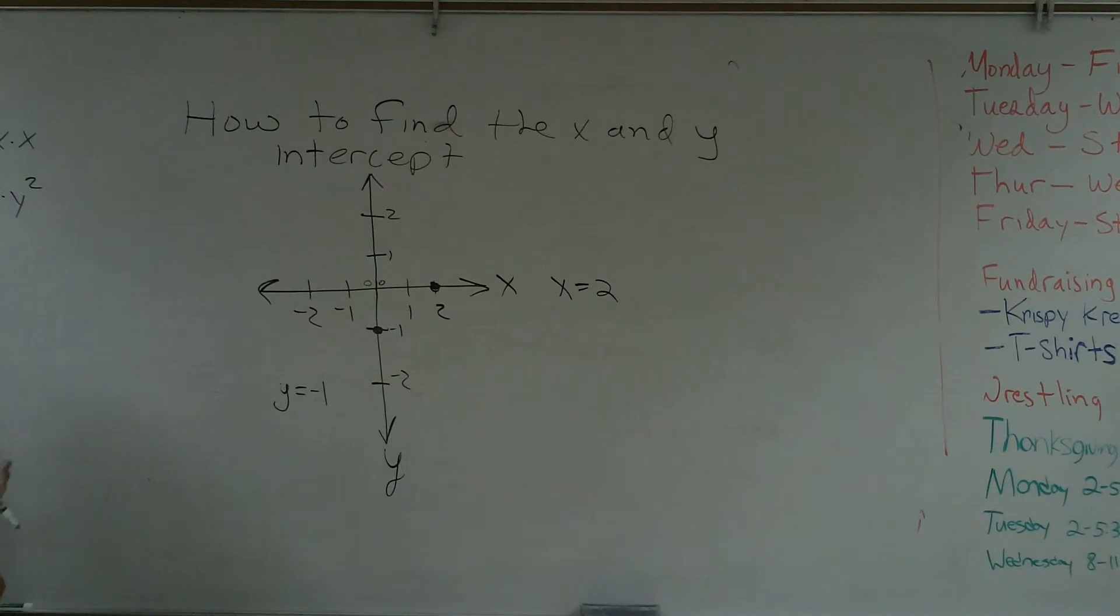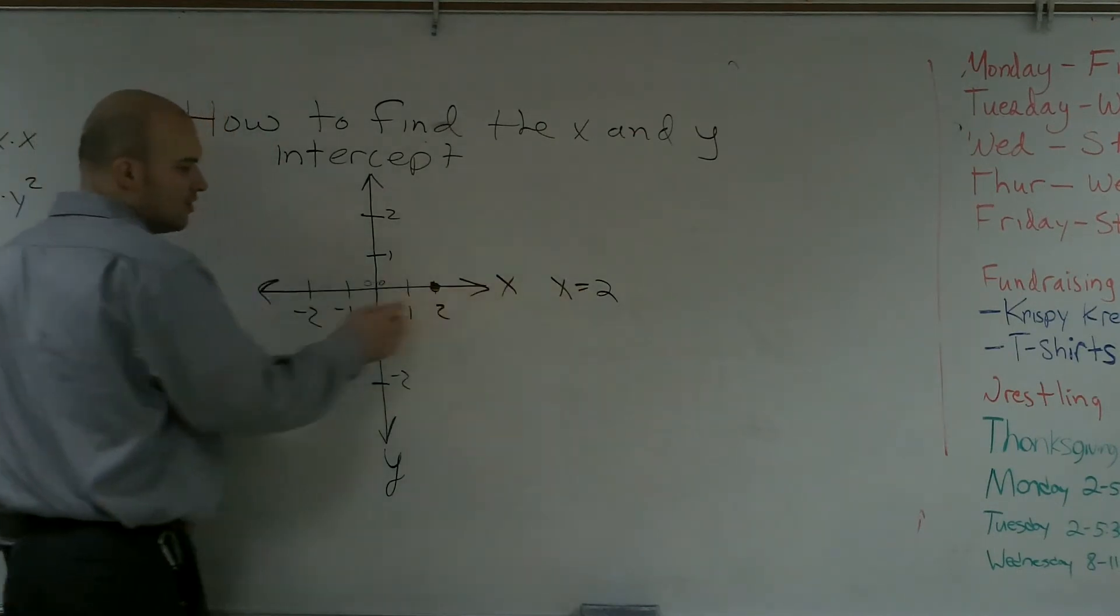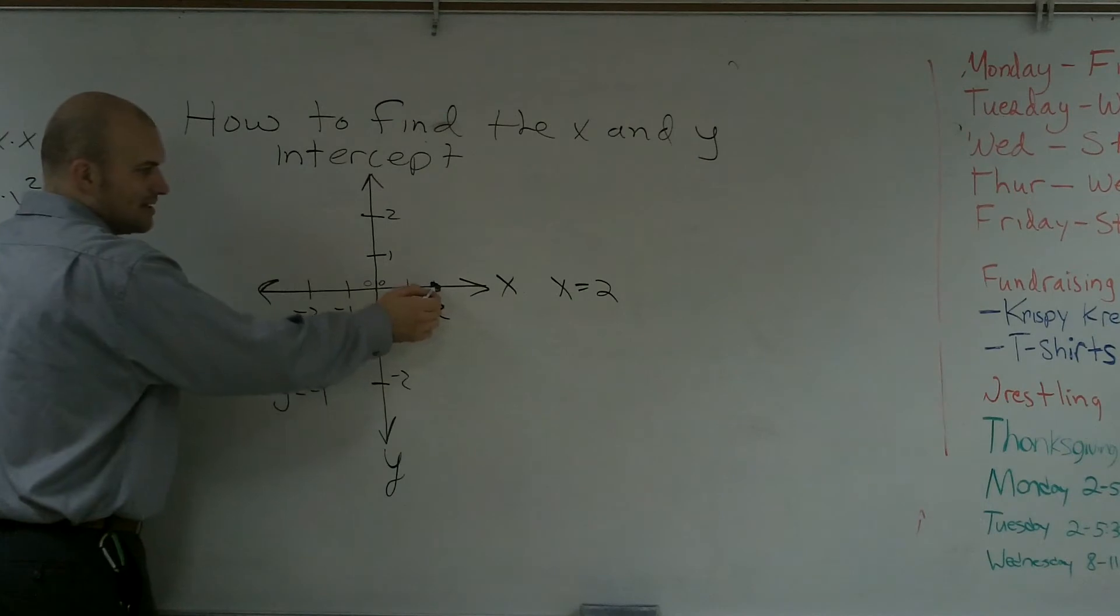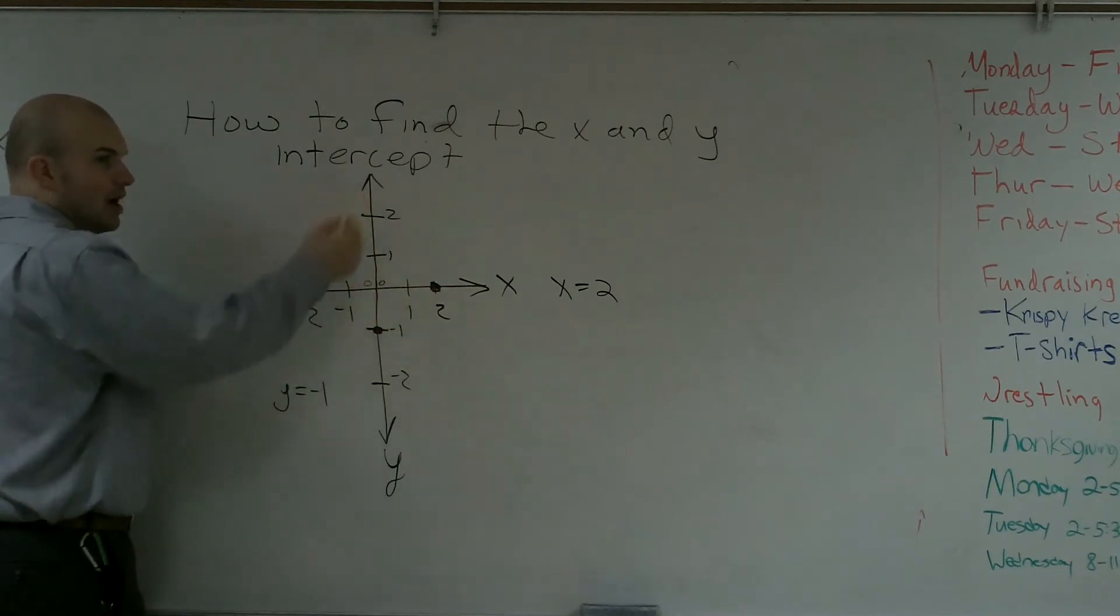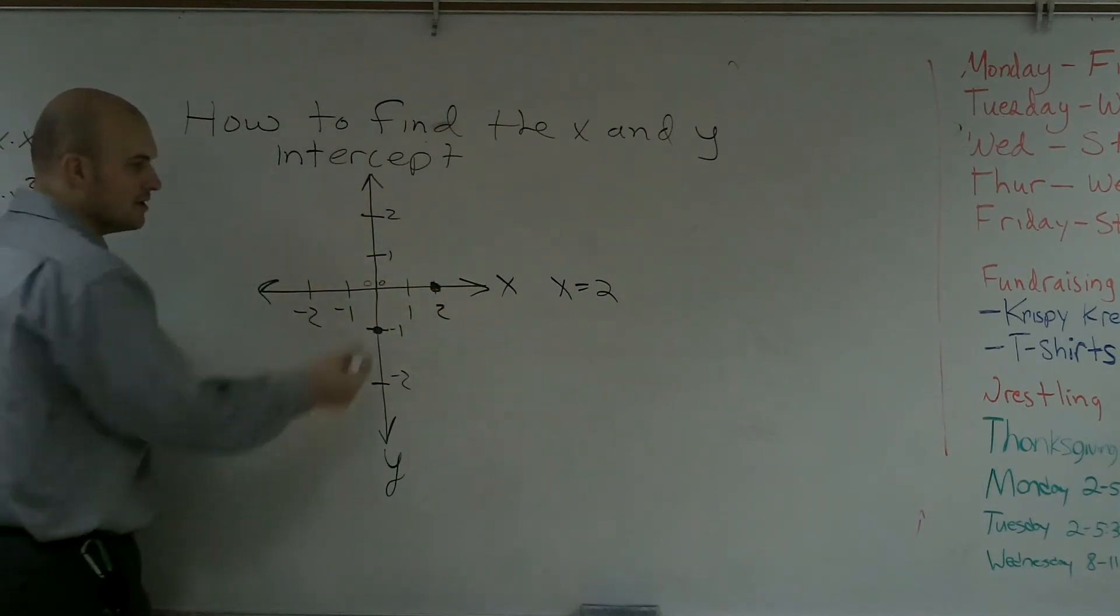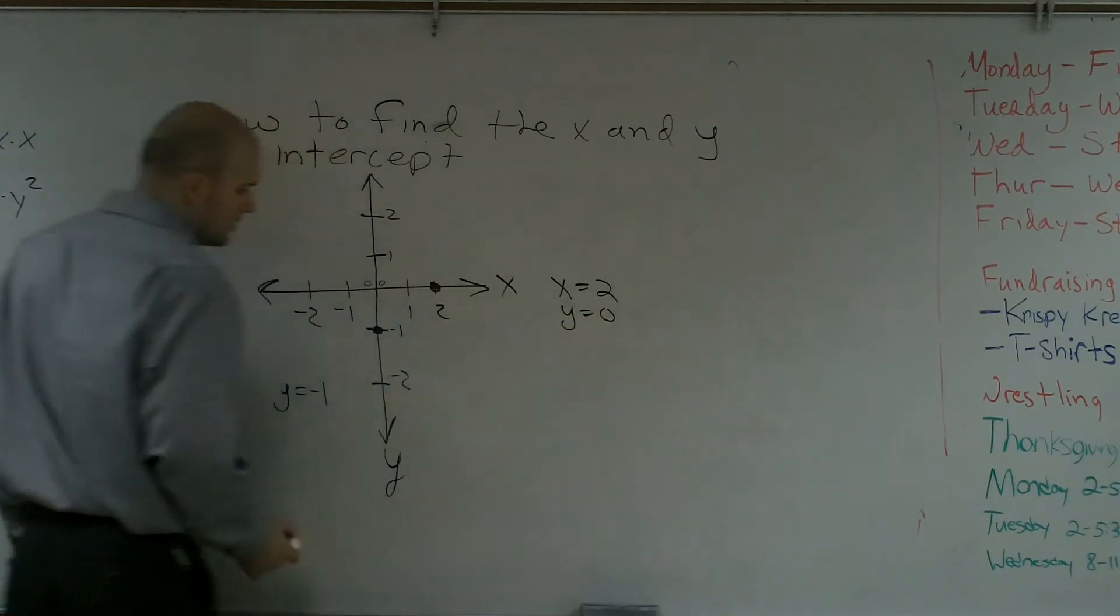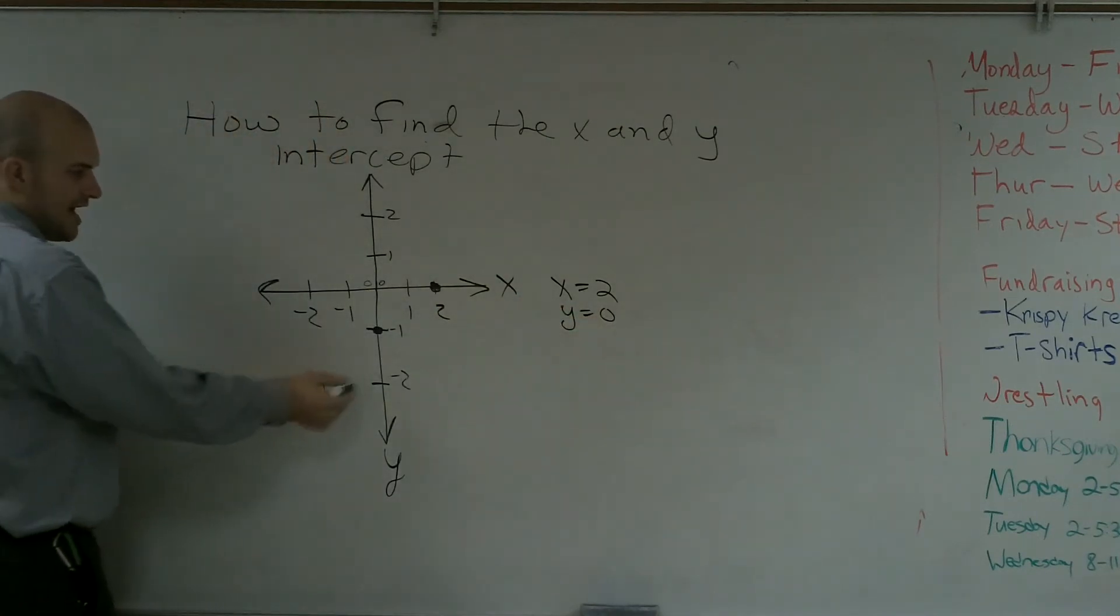Now the important thing you guys need to understand when we're talking about x and y intercepts, is when I say x equals 2, what is my y value on this y axis? So at this point, if I was going to look over here, did I go up or down at all? And the answer is no. So therefore, my y value is 0. And therefore, my x value for here, at negative 1, I didn't go left or right on this x axis, or this x number line. So my x value is equal to 0.